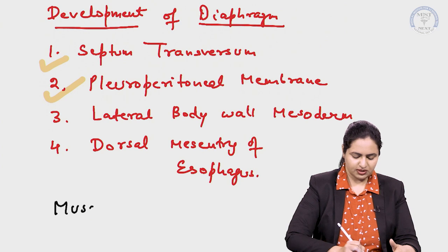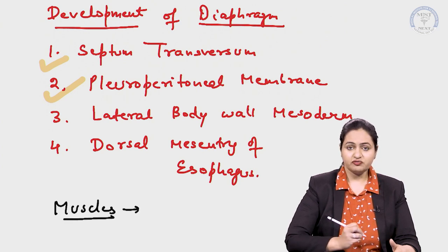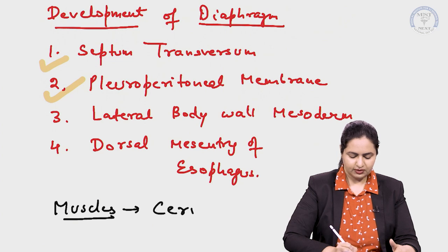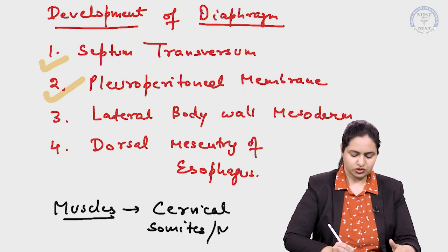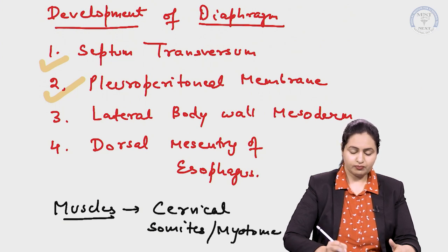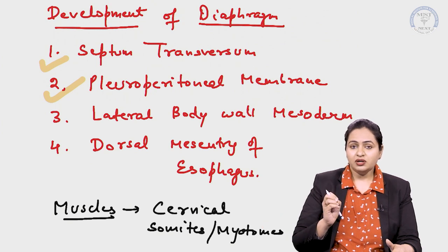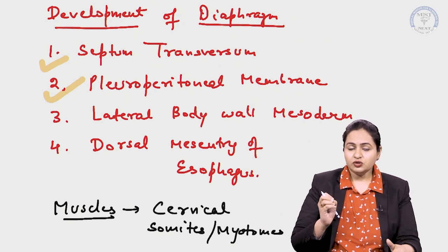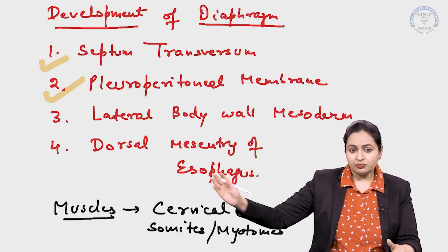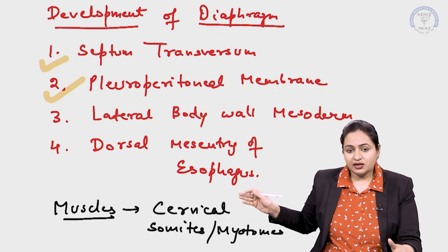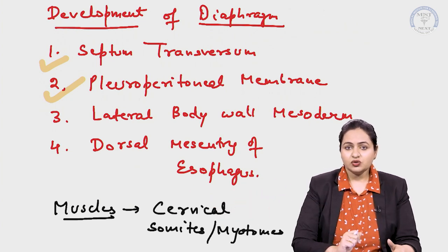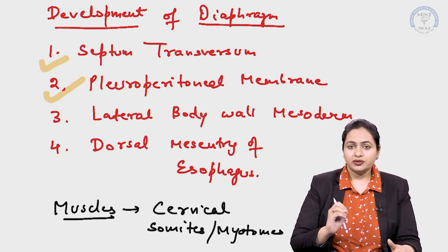Apart from this, the muscles of the diaphragm are specifically derived from cervical somites, which are also termed as myotomes. So all these structures together lead to the formation of the diaphragm, and the muscles of the diaphragm arise from these cervical somites or myotomes.